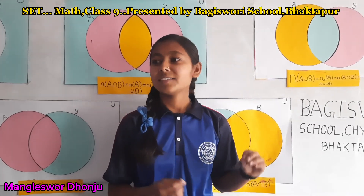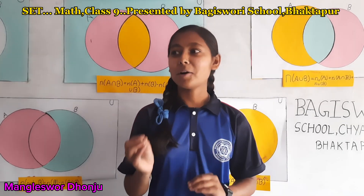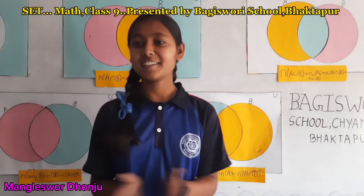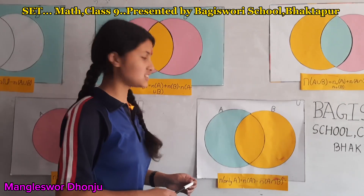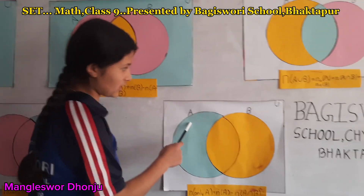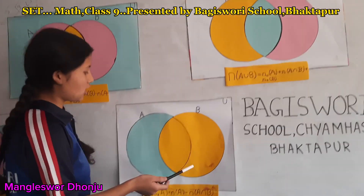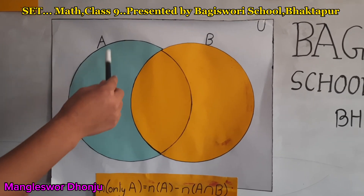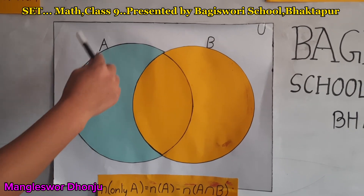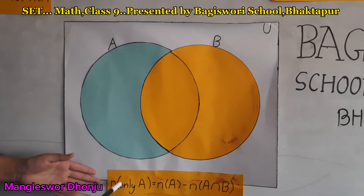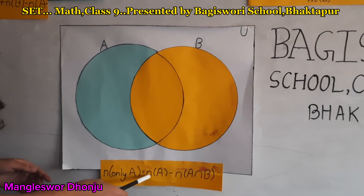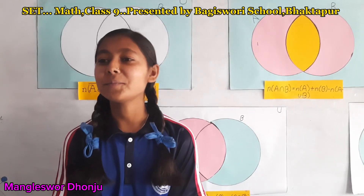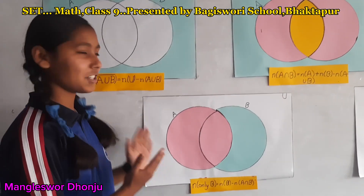Now let's move on. I'm calling my friend Mahmata for the description of the formula N only A. As you can see, this is the only part of A and this is the whole part of B. To get N only A, we have to remove the intersection part of A and B. Hence, the formula of N only A equals N(A) minus N(A intersection B). Thank you, Mahmata.